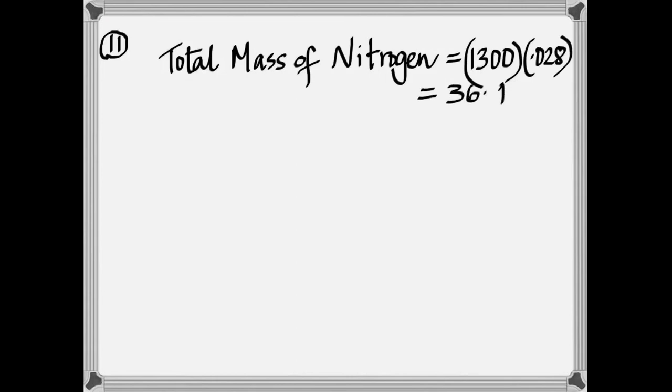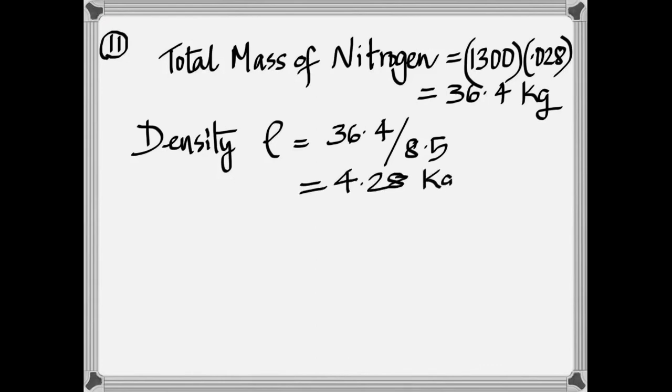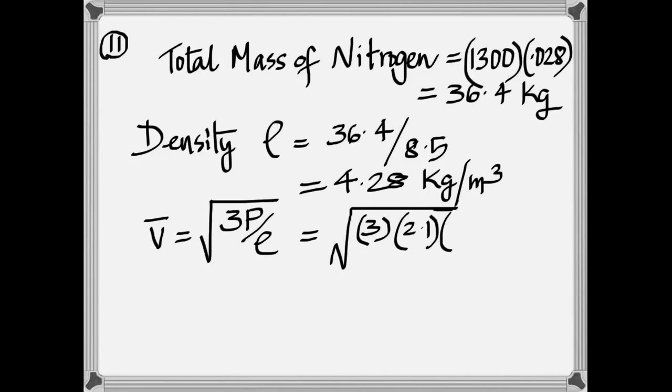Eleven. 1,300 moles is 36.4 kg. Density is mass by volume. So 36.4 divided by 8.5.